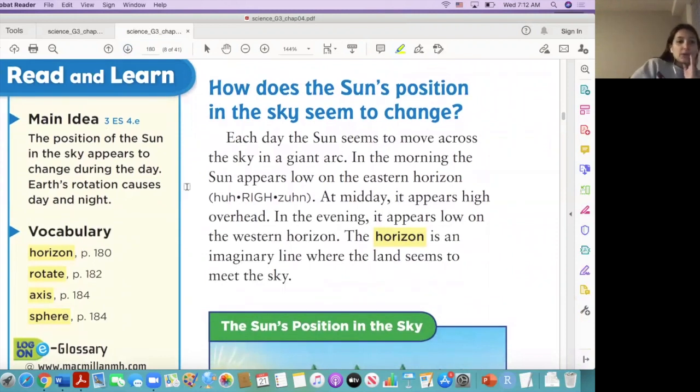Okay, so here the main idea is: the position of the sun in the sky appears to change during the day. Earth's rotation causes day and night. Okay, so we're going to see exactly what Earth rotation is.